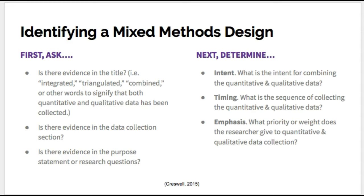To determine which individual type of mixed method design is being used, there is a second set of questions to ask. First, what is the intent of the study? Is the researcher looking to compare data, validate one with the other, or gain a more complete understanding of a problem? If so, the design is likely convergent. Is the researcher looking to have one set of data explained over the other, or build off the data for new information? If this is true, it is most likely an exploratory or an explanatory sequential design. Another intent may be to embed a set of data in a larger theory or experiment, which means it is one of the advanced designs.